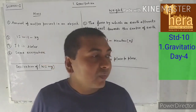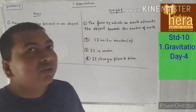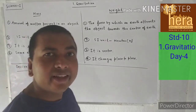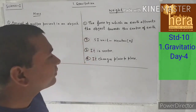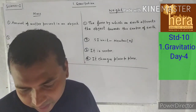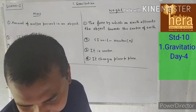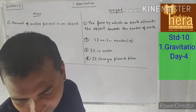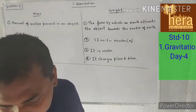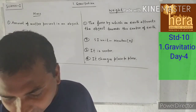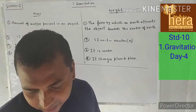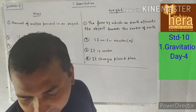Good morning students. Today we will continue chapter number 1, that is gravitation, and today we are going to discuss mass and weight, then free fall, gravitational potential energy, escape velocity and expression for escape velocity.